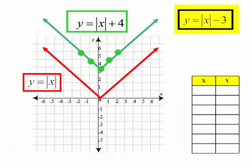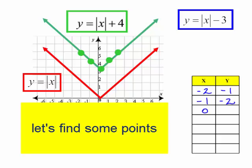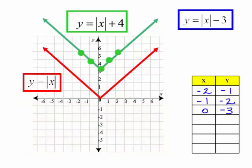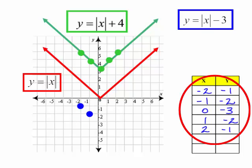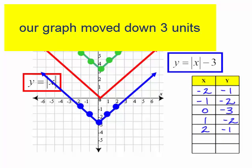Let's graph y equals the absolute value of x minus 3. We're going to plug in numbers again. I'm going to plug in negative 2. y will equal the absolute value of negative 2 minus 3. That would be 2 minus 3, which is negative 1. I'm going to continue plugging in numbers to find points for this graph. And now let's plot those points: negative 2, negative 1; negative 1, negative 2; 0, negative 3; 1, negative 2; and 2, negative 1. This is the graph y equals the absolute value of x minus 3.